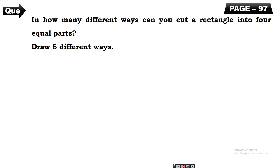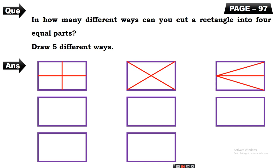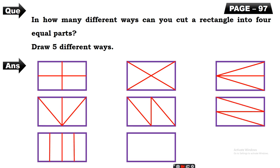We have to cut in 5 different ways here, but we will actually cut in eight different ways. We can divide a rectangle into four equal parts in eight different ways. The first way is like this, second way, third, fourth way, fifth way, sixth, seventh, and eighth. No pattern is repeated. We have divided each rectangle into four equal parts in eight different ways.